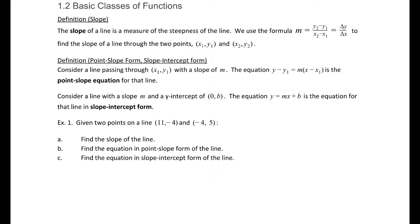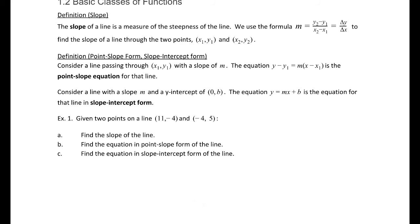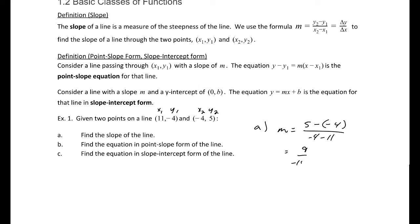Given two points on a line, (11, -4) and (-4, 5), find the slope. To find the slope, we take 5 minus negative 4 divided by negative 4 minus 11 — labeling these x1, y1, x2, y2. That comes out to be 9 over negative 15, which reduces to negative 3/5, reducing by 3.